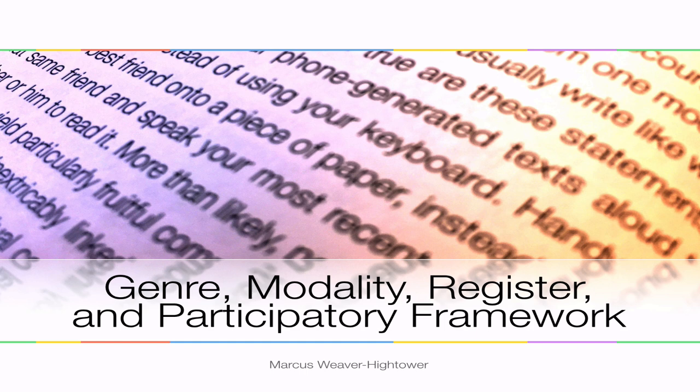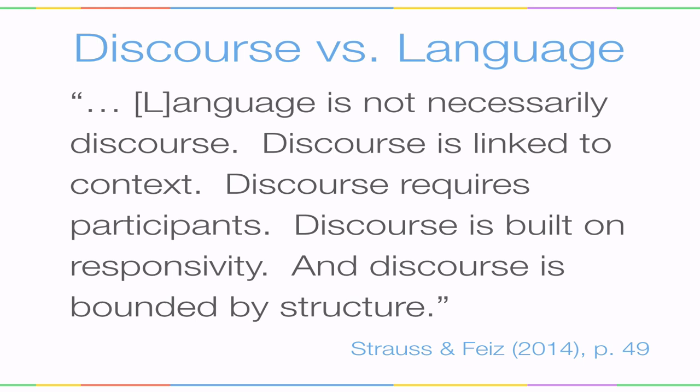Now we want to step back a little bit and think about the difference between discourse and language. Strauss and Fies, who are kind of the structurers of the topics I'll be talking about today, say that there are a number of different ways in which language is not necessarily discourse. Discourse is different from language — it includes language, of course, but there's more to it. For instance, language is linked to context. Something has to be going on. It can't just be pieces of language disconnected from the things that people are actually doing in an actual place in the world. Discourse also requires participants.